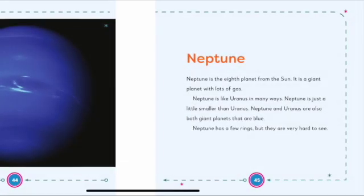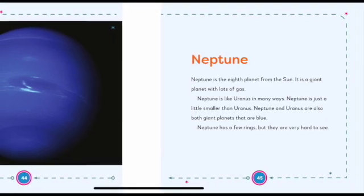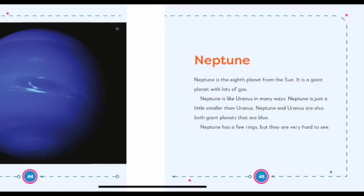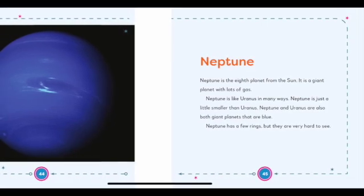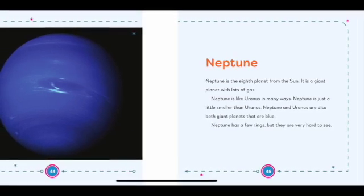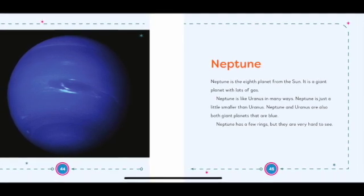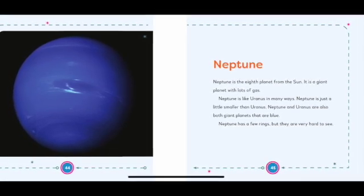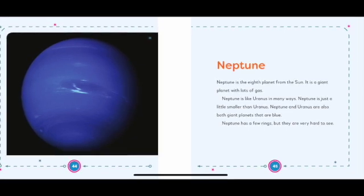Neptune. Neptune is the eighth planet from the Sun. It is a giant planet with lots of gas. Neptune is like Uranus in many ways. Neptune is just a little smaller than Uranus. Neptune and Uranus are also both giant planets that are blue. Neptune has a few rings, but they are very hard to see.